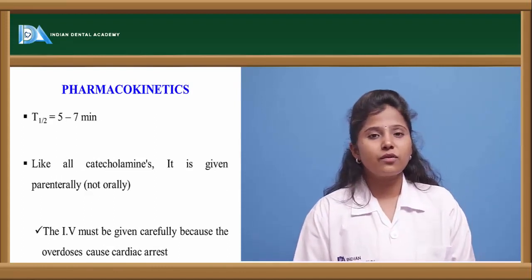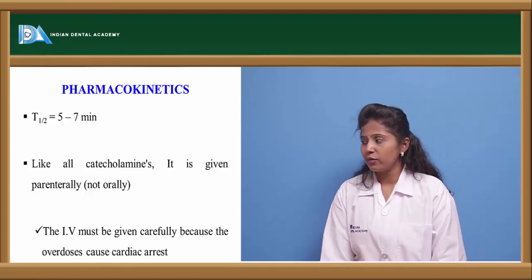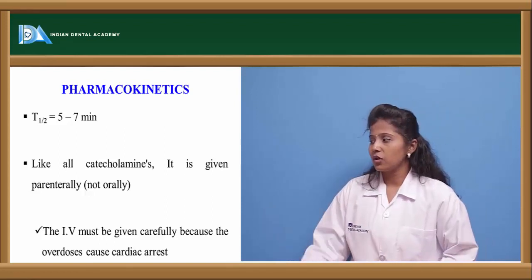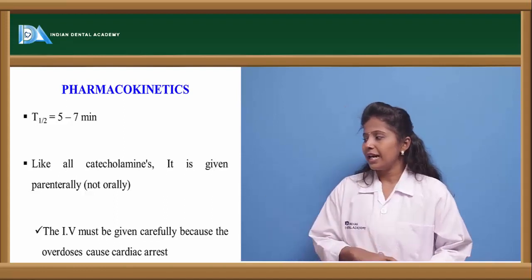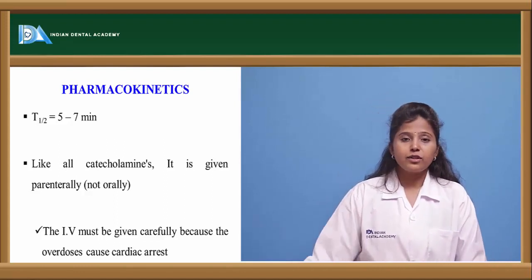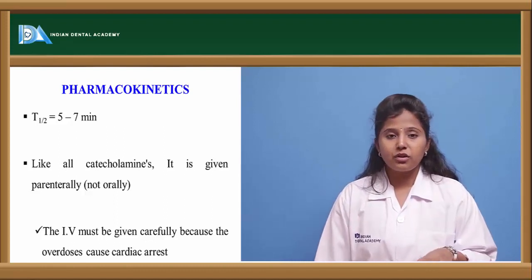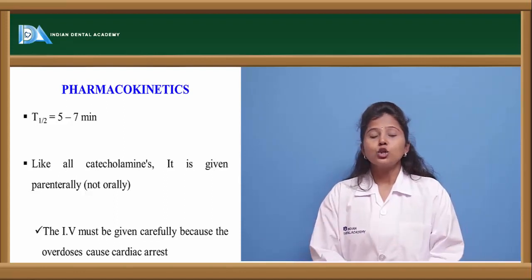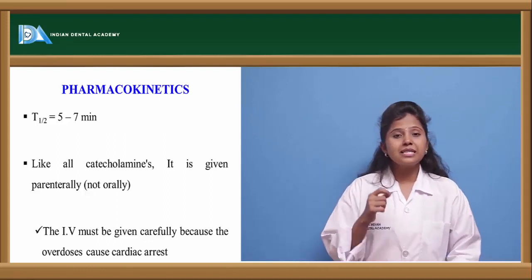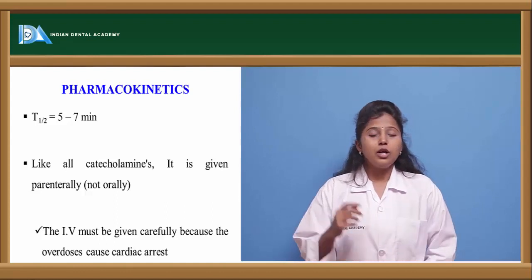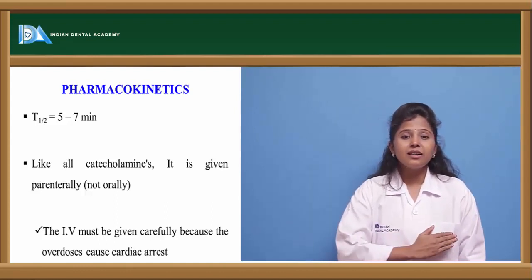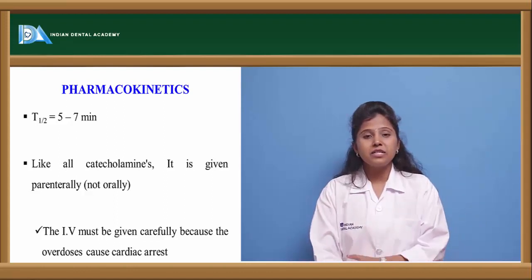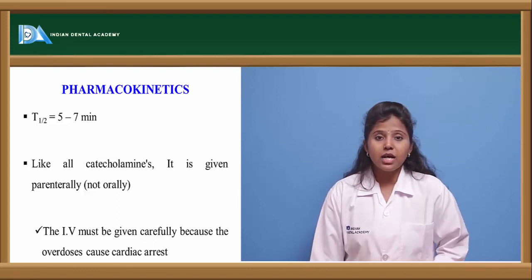Pharmacokinetics of isoprenaline: T-half is about 5 to 7 minutes. Like other catecholamines, it is given only through parenteral route. IV must be given carefully because overdose may cause cardiac effects. IV route gives 100% bioavailability, meaning the drug acts very rapidly; excessive dose can cause cardiac arrest.